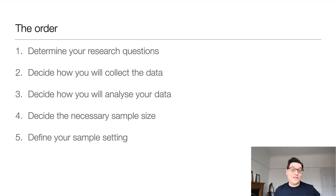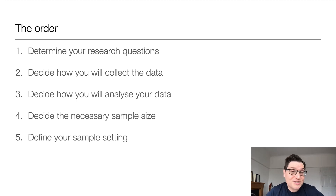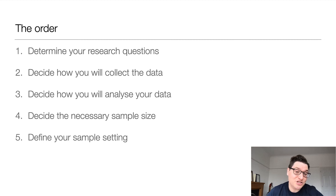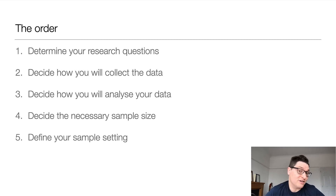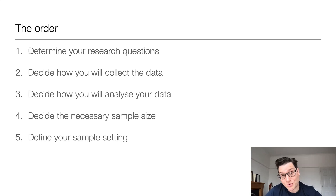And then in the next section we're going to talk about actually developing it. That's going to be thinking about research questions, deciding how you collect your data, deciding how you analyze data, choosing the right sample size, and then defining the settings. That's the way I would approach creating a methodology. There's no hard and fast rule — you could do it in any order at some level — but that's the order we're going to take it today.